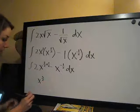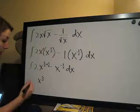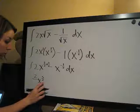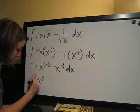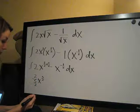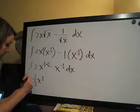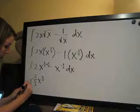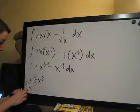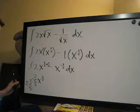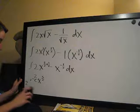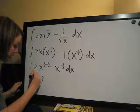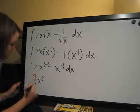And then we are going to take 2, and we are going to divide by 2 being the coefficient, and we are going to divide by the new exponent, 5 halves. 2 over 5 halves is the same as 2 times 2 over 5, which is 4 fifths. So, we are going to go ahead and make this 4 fifths, simplify that.